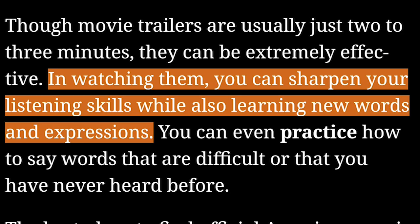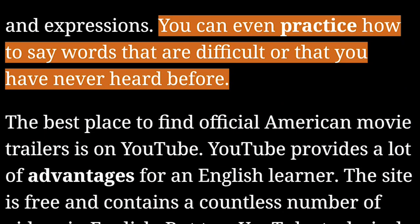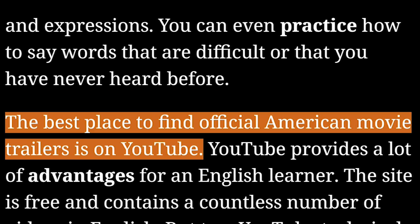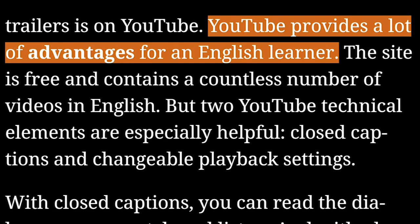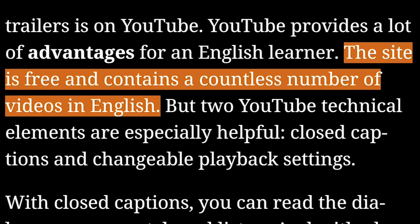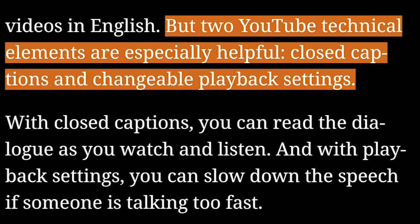In watching them, you can sharpen your listening skills while also learning new words and expressions. You can even practice how to say words that are difficult or that you have never heard before. The best place to find official American movie trailers is on YouTube. YouTube provides a lot of advantages for an English learner. The site is free and contains a countless number of videos in English, but two YouTube technical elements are especially helpful: closed captions and changeable playback settings.